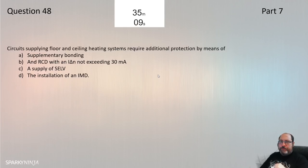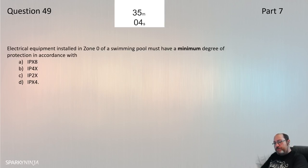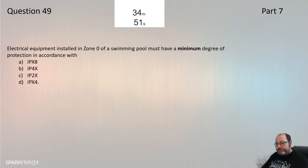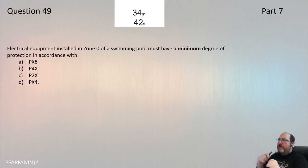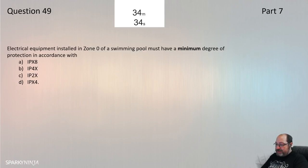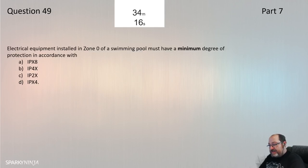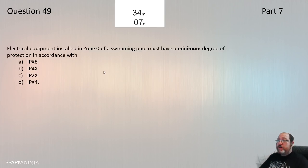Question 49: Swimming pools — regulation 702. Equipment installed in Zone 0 must have a minimum degree of protection in accordance with... This asks about external influences and equipment selection. Regulation 702.512.2 — external influences, Zone 0: IPX8A. Question 49 is A.